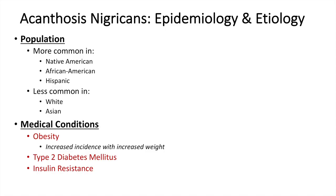Another syndrome called polycystic ovarian syndrome is one that we don't always think about having associations with insulin resistance, but in fact there are associations between polycystic ovarian syndrome and insulin resistance, which increases an individual's risk of developing acanthosis nigricans.